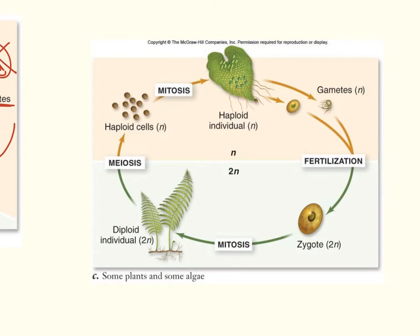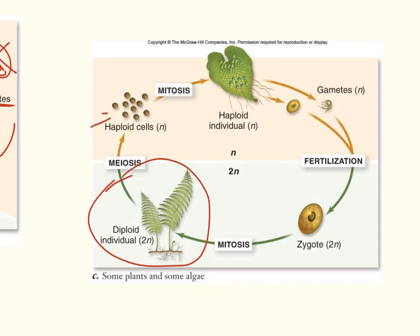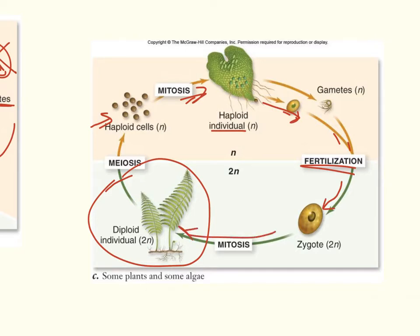There are some plants and algae that spend about half their life cycle in the haploid state and half in the diploid state. The classic example are ferns. The ferns you see in the forest represent only the diploid part of their life cycle. On the back side you can see little brown dots — these are haploid cells. They go through mitosis to produce small heart-shaped haploid individuals, which then produce haploid gametes through mitosis, not meiosis, because they're already haploid.